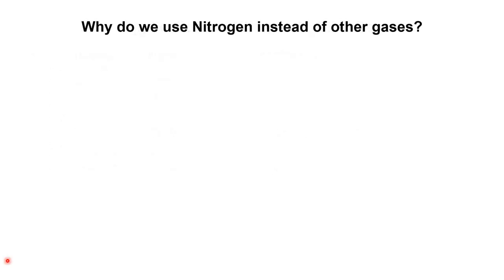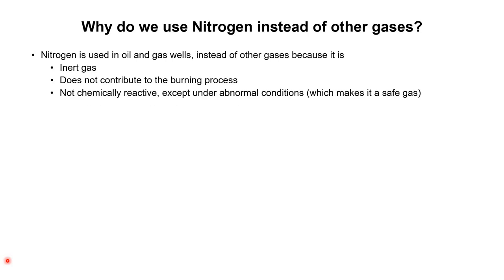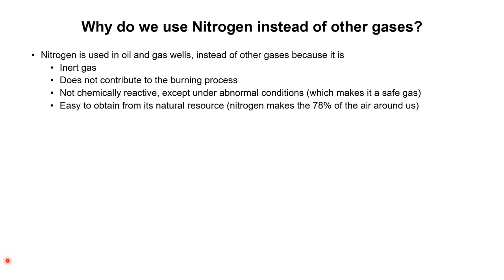So why do we use nitrogen instead of other gases? Nitrogen is used in oil and gas wells instead of other gases due to a number of reasons. The first is that it is an inert gas and nitrogen does not contribute to the burning process. Nitrogen does not chemically react except under abnormal conditions, which makes it a safe gas. It is easy to obtain from its natural resource — nitrogen is present in the air with a percentage of 78%, so we can easily obtain it from the atmosphere.